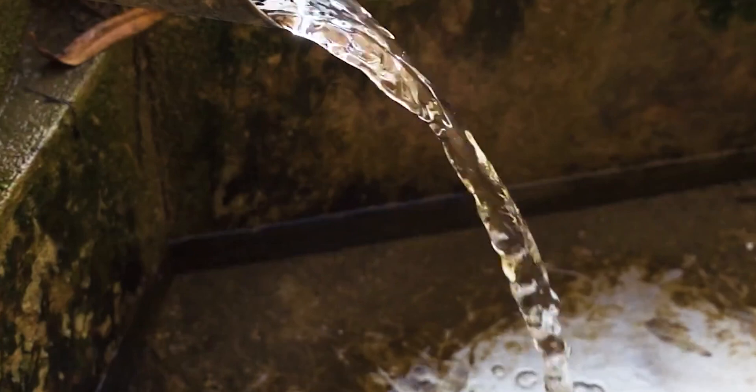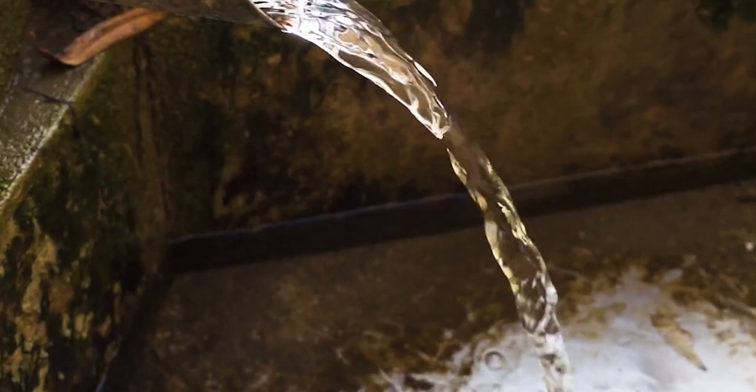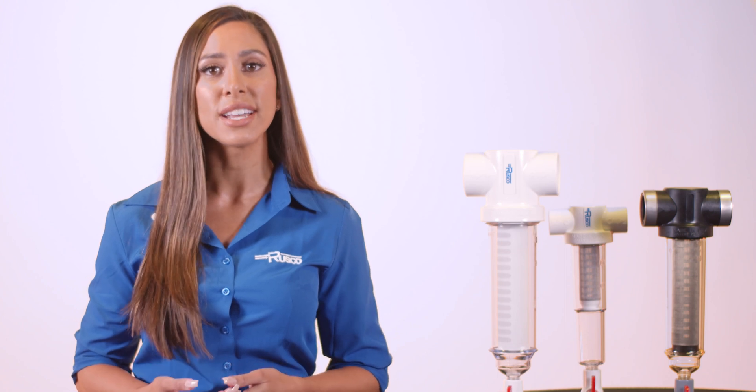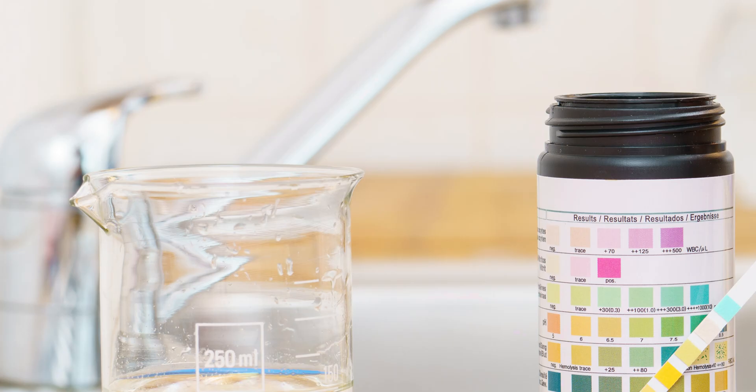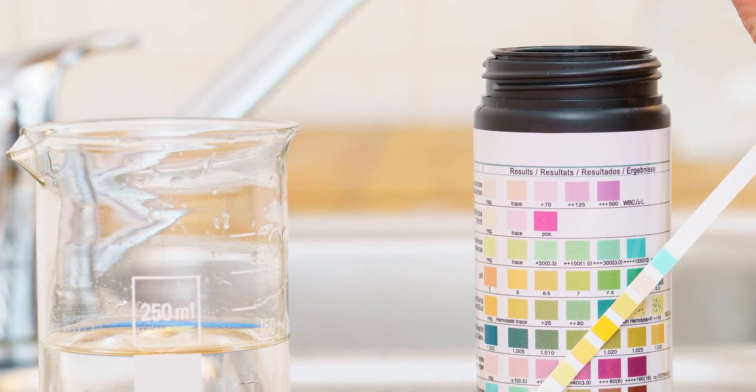Sometimes this can be easy to spot because you can actually see things floating in your water. Or maybe you see your toilet or your bathtub turning a rusty color. But sometimes the particles can be very small and really hard to see. This is where getting your water tested would be a great idea. There's a lot of places that will send you a test kit for free.